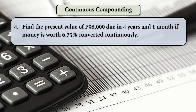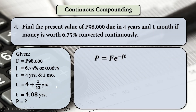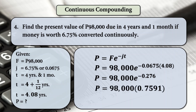Next example: find the present value of 98,000 pesos due in 4 years and 1 month, if money is worth 6.75% converted continuously. Given: F is 98,000. We need to find P. J is 6.75% or 0.0675. T is a combination of years and months: 1 over 12 equals 0.08, plus 4 equals 4.08 years. Finding for P: 98,000 times E raised to negative 0.0675 times 4.08. The exponent equals negative 0.276, and E raised to that exponent is 0.7591. Times 98,000, that equals 74,391 pesos and 56 centavos.